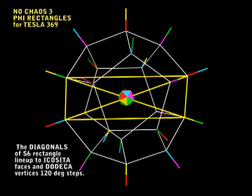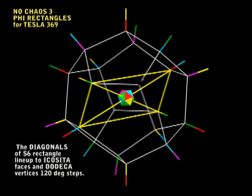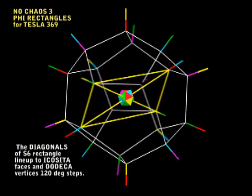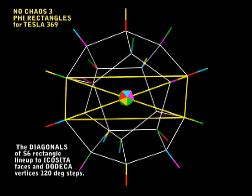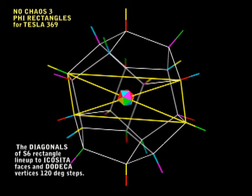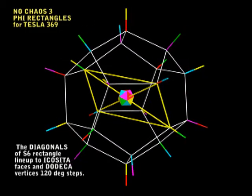I could have changed the diagonal colors to the same as the vectors. But if you look, the Icosita faces will give you the colors, so there's no need.